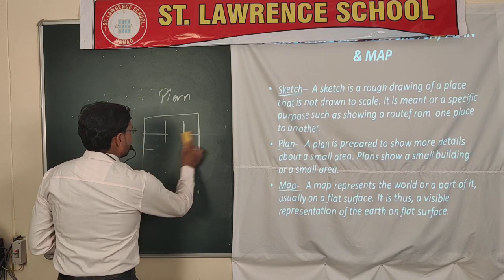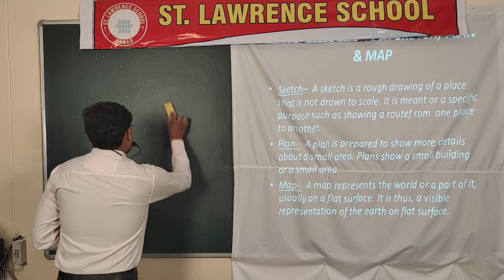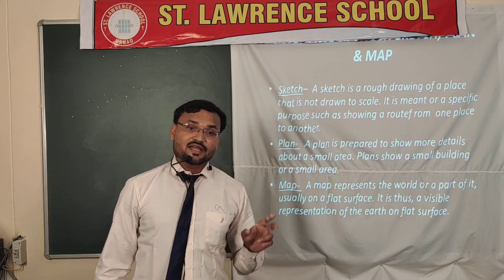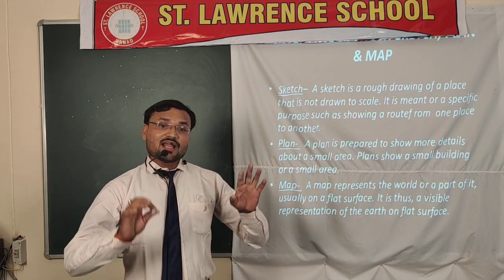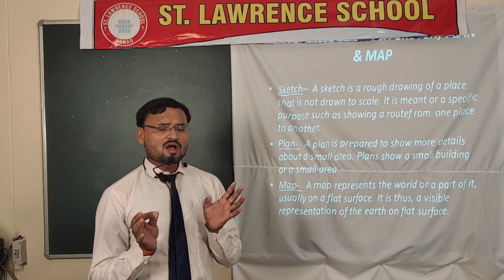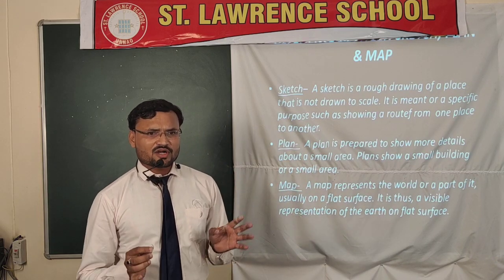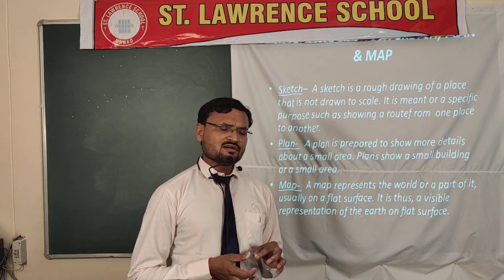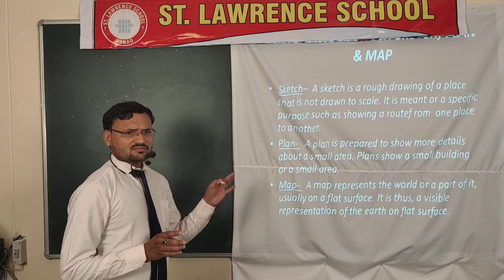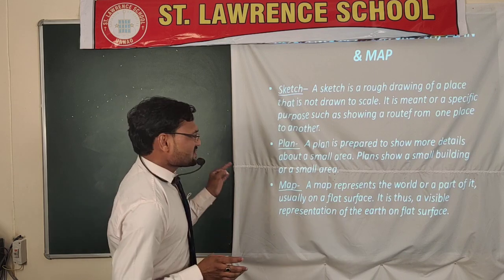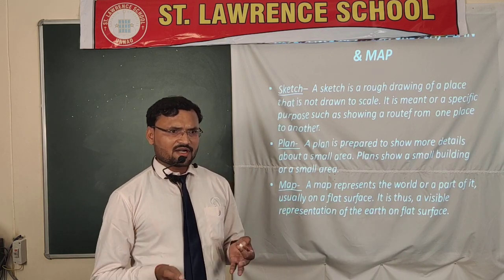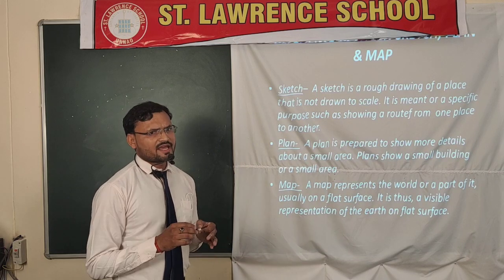Then, the next point is the map. A map is a representation of the Earth or any portion of the Earth on a flat surface. The Earth as a whole has a globe, but it is not convenient to carry a globe anywhere and it is not possible to fold it. So to reduce that problem, we prepare maps on flat sheets that are visible to everybody and very convenient to carry.